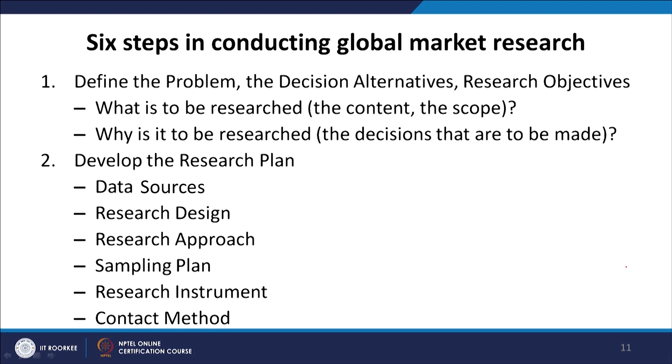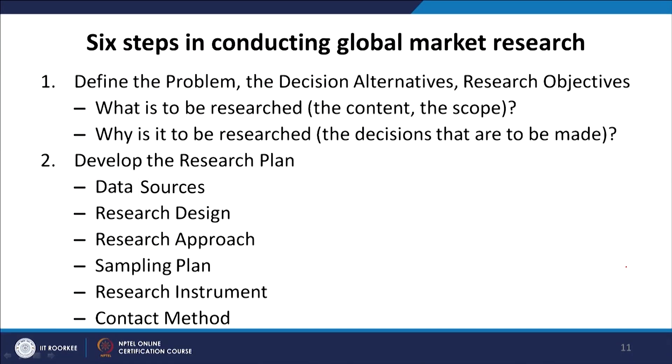The first step of the global marketing research process is to define the problem, the decision alternatives and the research objectives — what is to be researched and why. The second step is to develop a research plan, which includes six components: data source, research design, research approach, sampling plan, research instrument and contact method.